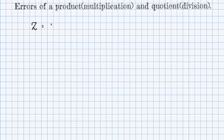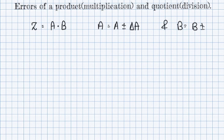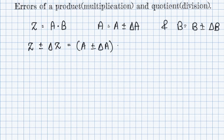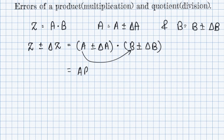What we are going to do is multiply two values, that is a into b. Our a equals its real value plus or minus its absolute error Delta a, and b equals b plus or minus Delta b. For the resultant value Z plus or minus Delta Z, we need to multiply (a ± Δa) into (b ± Δb).